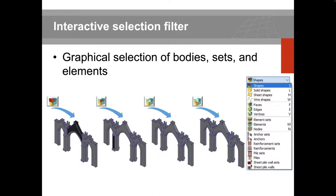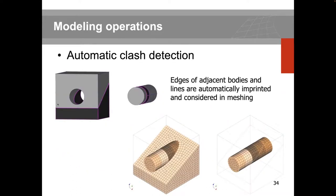Diana uses auto-clash detection, so you don't need to worry about the nodal connectivity of different geometry components interacting with each other. Diana automatically ensures perfect continuity and connectivity between meshes — for example, between a tunnel and surrounding soil block — ensuring full mesh compatibility with no loose connections.